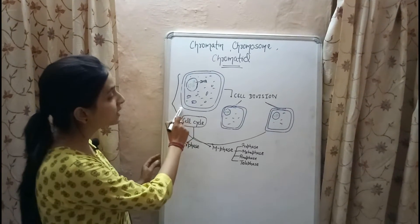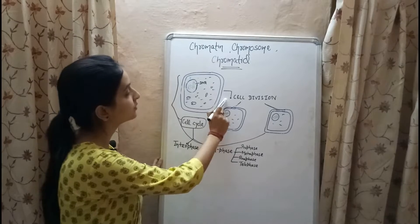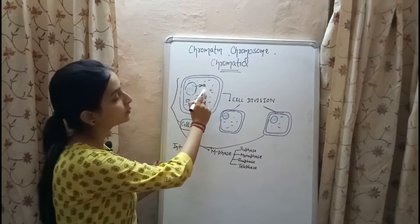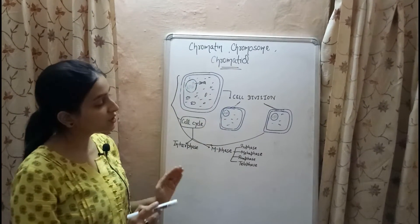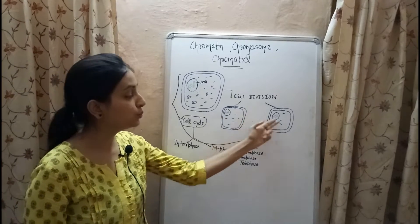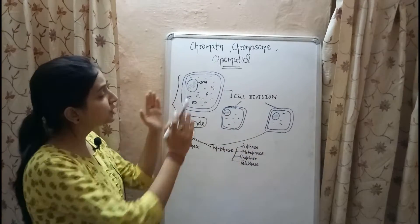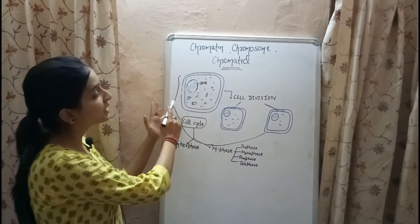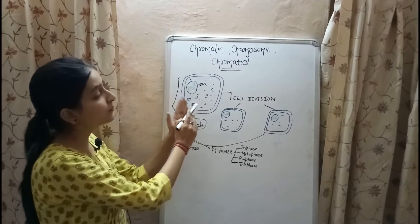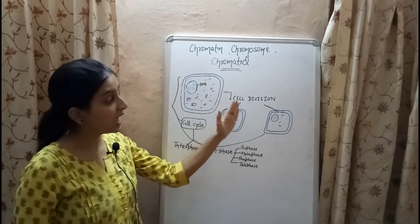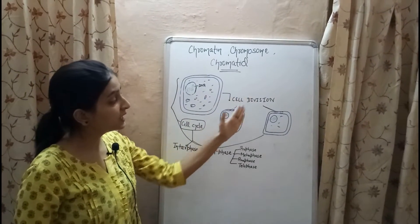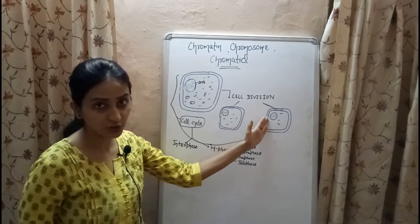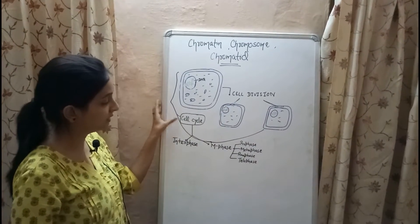The cell, by a process called cell division, replicates its DNA and other components and eventually divides to form two new daughter cells. The sequence of events involving the preparation of the cell for cell division and the actual division process leading to the formation of two new daughter cells is known as the cell cycle.